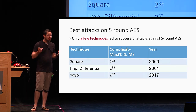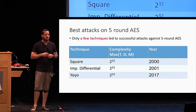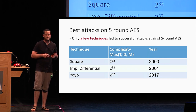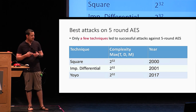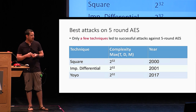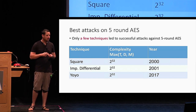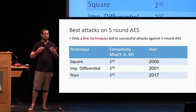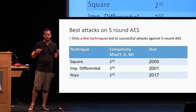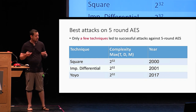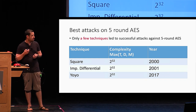So far, in the past 20 years, there were relatively very few techniques that actually led to what we call successful attacks against five-round AES. And all of them hit a specific barrier at 2^32 complexity, and we can't do any better than that.